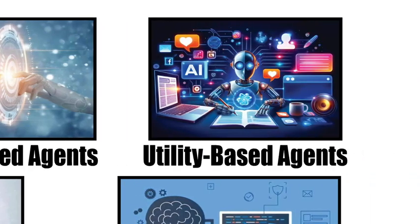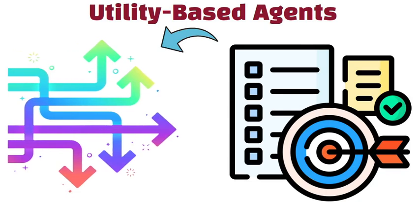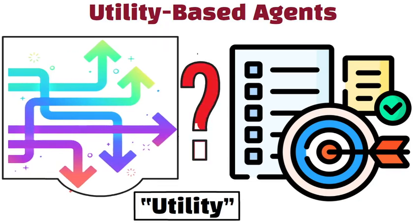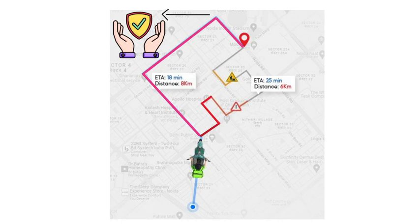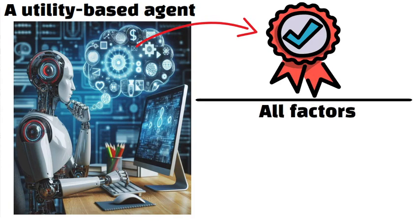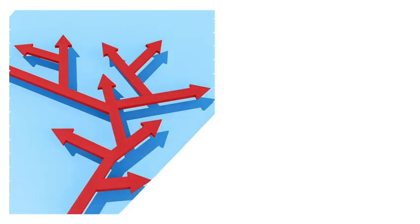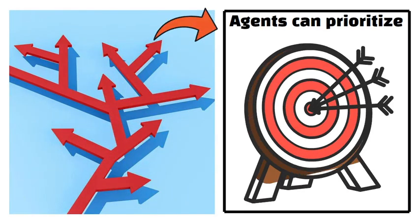Utility-based agents take goal-based planning further by weighing the benefits of different outcomes. They use a concept called utility to decide which action will give the best overall result, not just any result that meets the goal. Imagine choosing between a safe, slow route and a faster, riskier one. A utility-based agent will calculate which option provides the highest reward when all factors such as time, safety, and comfort are considered. This approach allows for more flexible decision-making where agents can prioritize among multiple competing goals.